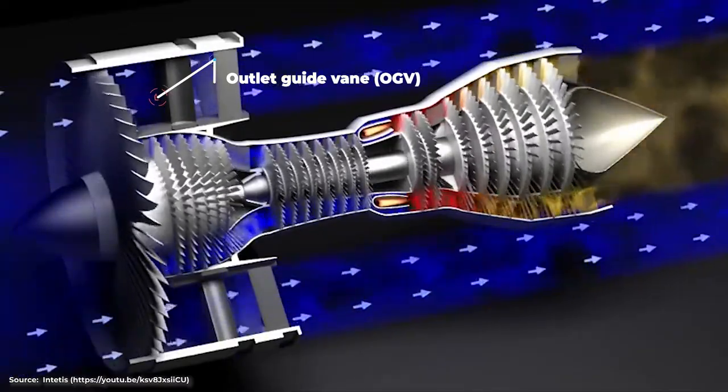However, what lies behind it is a set of non-moving blades known as the outlet guide vane or OGV for short. The OGV is installed to improve the overall efficiency of the engine by making the flow coming out of the fan to be more straight. Think of it like a comb for tidying up your hair.